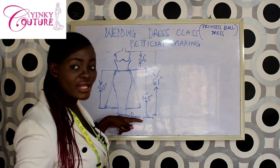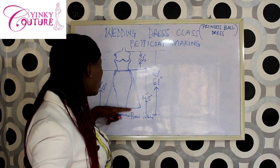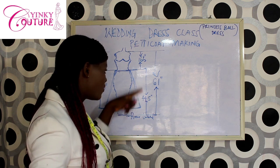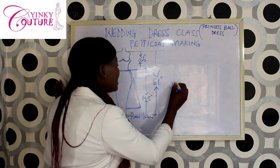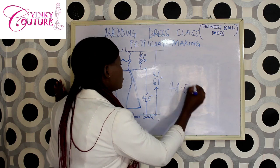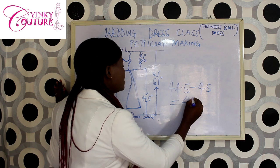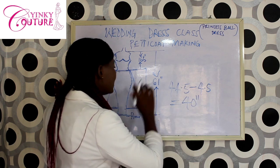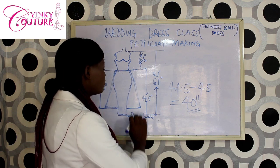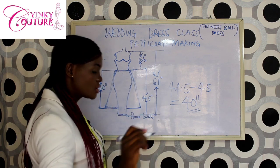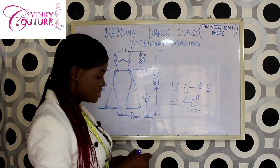Now for the petticoat, I'm not going to allow it to reach the floor level. I will allow it to go up a little. So from 44.5, which is the actual skirt length, I'm going to subtract 4.5, which gives me 40 inches. That 40 inches is the length of my petticoat. It must not reach the floor level so as not to give the wearer discomfort. So we'll be working with a 40-inch petticoat length.